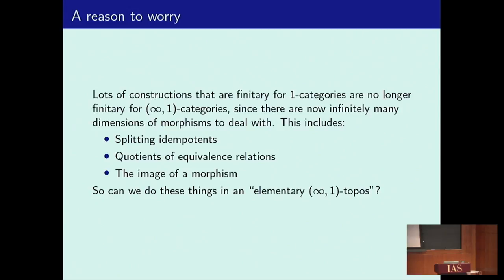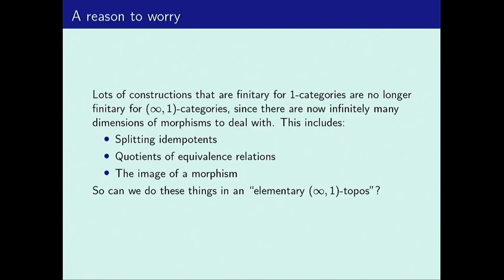The quotient of an equivalence relation is a very simple thing in set theory, but in higher category theory it involves infinitely much stuff — if you have X and Y related by your equivalence relation, you want to glue in a homotopy from X to Y; but then if you also glue in homotopies from Y to Z and from X to Z, that triangle should commute, so you have to glue in a higher cell, and then you get tetrahedra and so on. So it's an infinite colimit. The image of a morphism: one straightforward way is to take its kernel pair and take the quotient — to mod out the domain by the equivalence relation induced by the map. But the infinity kernel is a simplicial object with infinitely many pieces, and its colimit — geometric realization — is an infinite thing. So it's not obvious we can do these things in an elementary infinity topos whose structure is only finitary.